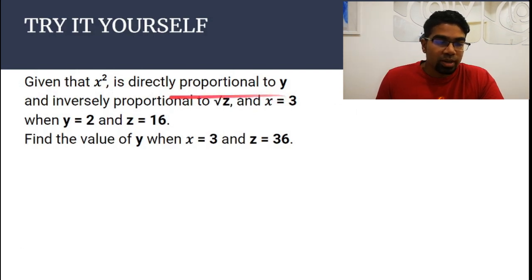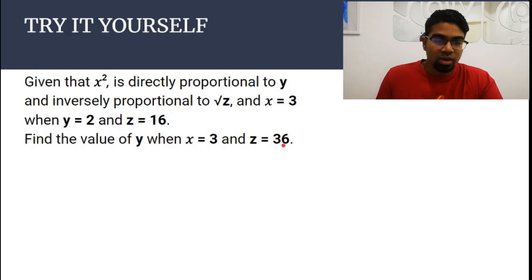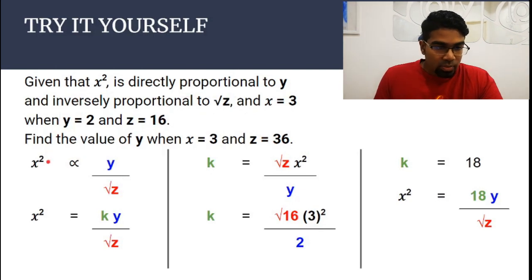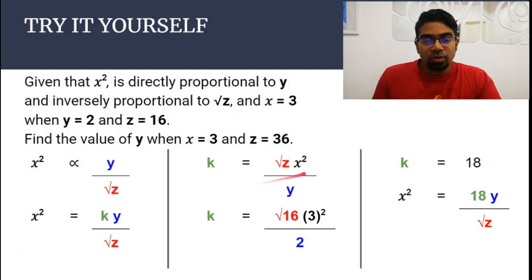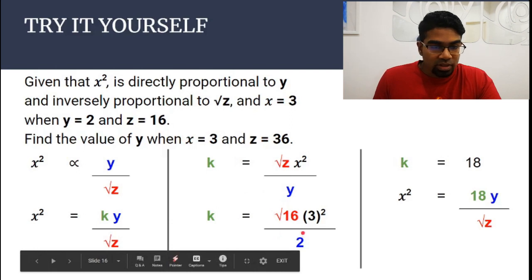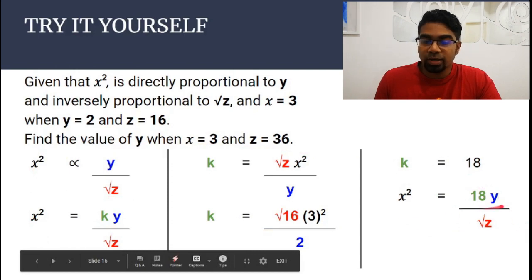Given that x squared is directly proportional to y and inversely proportional to the square root of z, and x is 3 when y is 2 and z is 16, find the value of y when x is 3 and z is 36. Whenever we want to solve anything, we need to find the equation first. So x squared is proportional to y over square root of z. Add the proportionality constant k, rearrange to make k the subject, substitute the given values — x is 3, y is 2, z is 16 — and we get k equals 18. Substituting back: x squared equals 18y over square root of z.